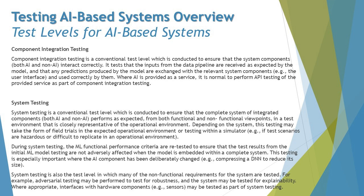Depending on the system, testing may take the form of field trials in the operational environment or testing within a simulator — useful when test scenarios are hazardous or difficult to replicate. During system testing, ML functional performance criteria are retested to ensure that results from initial ML model testing are not adversely affected when the model is embedded in a complete system. This is especially important when the AI component has been deliberately changed, requiring regression testing.